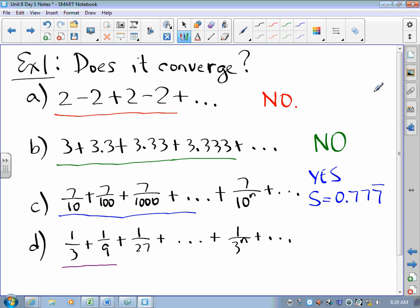1 third, 4 ninths, a bunch of 27ths, and so on. This also converges. In fact, it can be proven that the sum is one half.